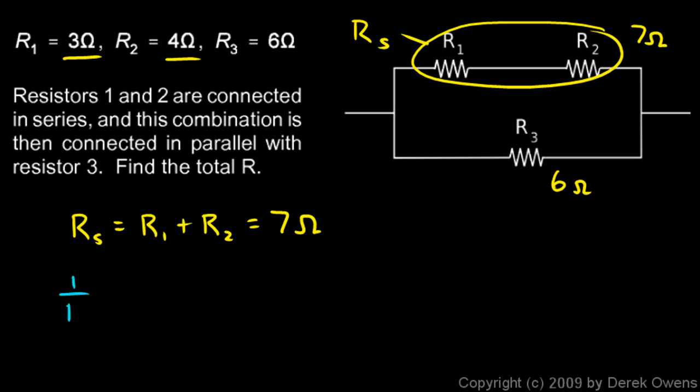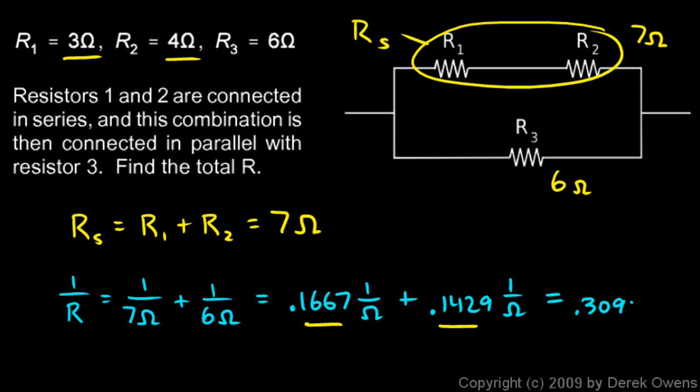So my total resistance, 1 over R, is going to be 1 over 7 ohms plus 1 over 6 ohms. And I'm going to pull out the calculator and do this one in decimal form. 1 over 7 is 0.1667. And the unit there is 1 over ohms. And 1 over 6 is 0.1429. And then I can just add those two numbers. 0.1667 plus 0.1429 equals 0.3095.